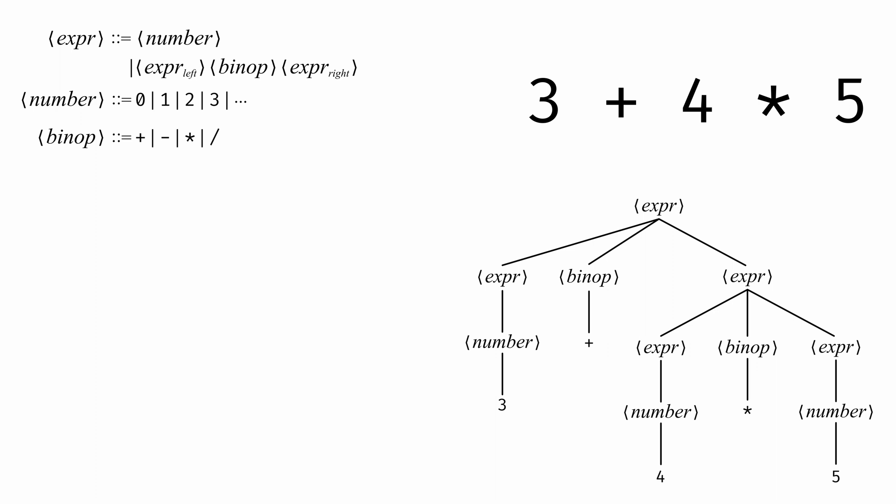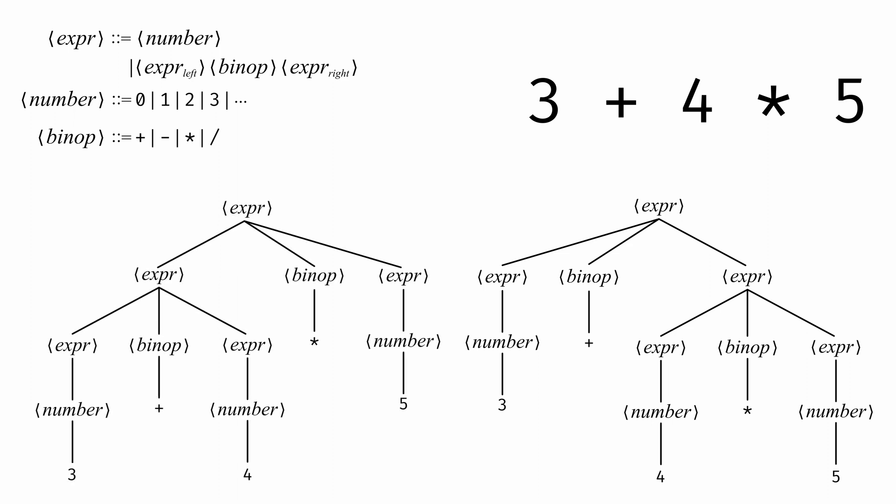This syntax tree here is the underlying hierarchical structure of the expression that we write linearly as 3 plus 4 times 5. But one thing you might notice is that there's another structure that seems to also correspond to this same sequence of symbols. We could instead use this syntax tree, where the left expression is the addition of 3 and 4, and the right expression is the number 5.